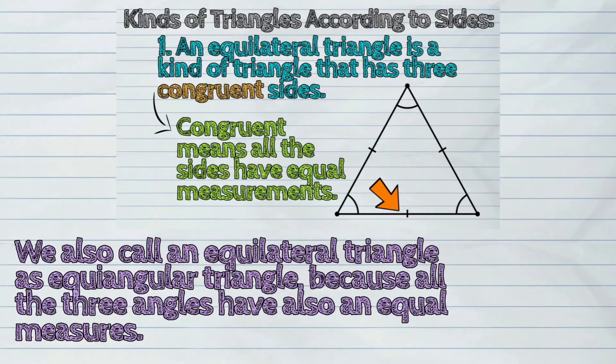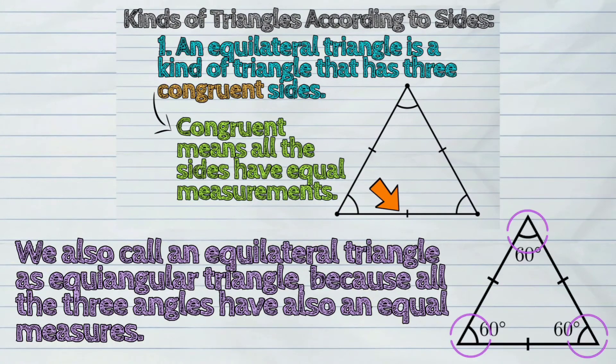We also call an equilateral triangle as equiangular triangle, because all the three angles have also an equal measure.